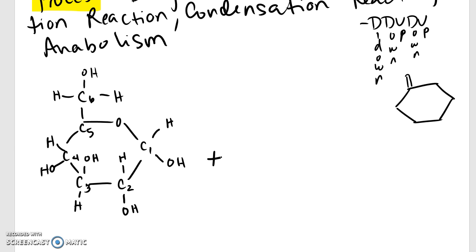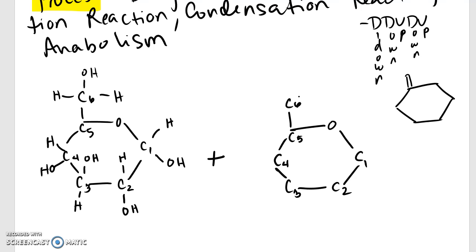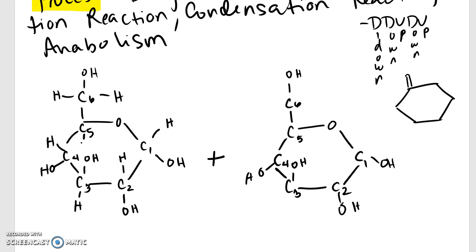You got to do another one, because maltose is made of two alpha glucose. You can't go lazy — you cannot forget to add your H's, although it might be assumed. No assumptions here. Down, down, up, down, up. And then look what I just figured out — I missed an H. I'm going to put that there; it's the most forgotten H, just like what I did. Every carbon must have four covalent bonds; double check that now.